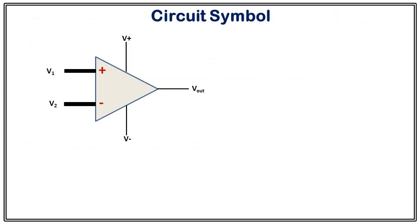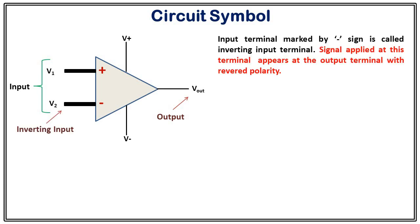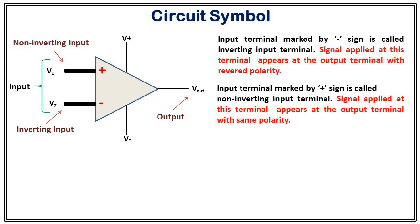This is the circuit symbol of an op amp. In an op amp we have two input terminals and one output terminal, and we have two terminals for the power supply. Generally op amp is powered by positive and negative polarity of the power supply. Here you can easily see two different input terminals marked by two symbols. The input terminal marked by the negative sign is called the inverting input terminal. If you apply a signal at the inverting terminal, then this signal will appear at the output with reverse polarity. That is, if you apply a positive voltage on the inverting terminal, then at the output terminal you will always receive a negative voltage. The terminal marked by the positive sign is called the non-inverting input terminal. If you apply any signal at this terminal you will receive the same polarity at the output terminal.